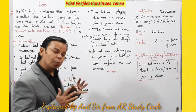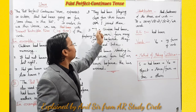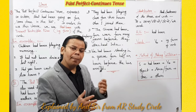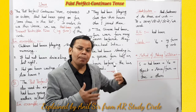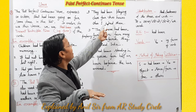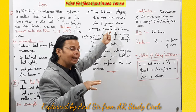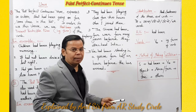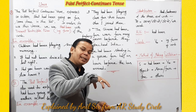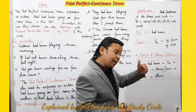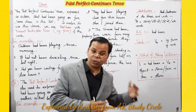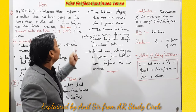Example: 'He had been playing chess for two hours when I joined them.' Jab mein unke saath shamil hua, tab woh do ghante se chess khel rahe the. Matlab do ghante ho gaye the unhe chess khelate, us ke baad mein aaya aur unke saath us game mein shamil ho gaya.